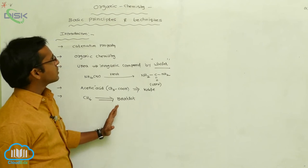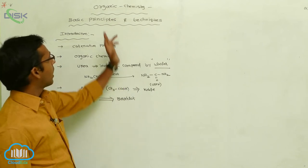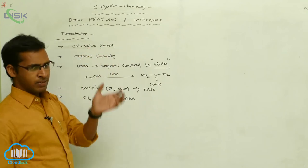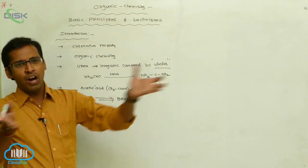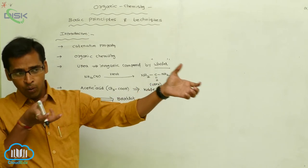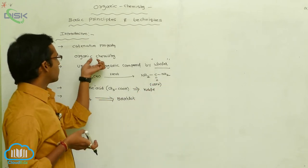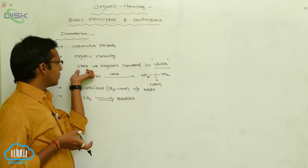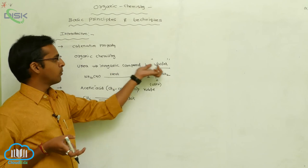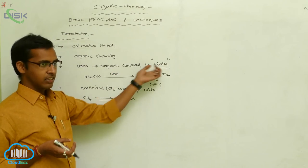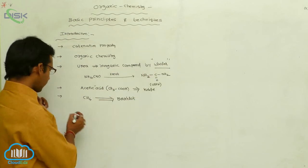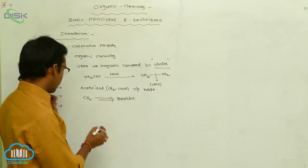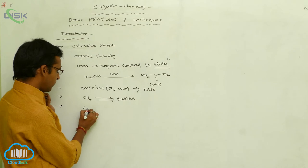In summary for the introduction: carbon shows the catenation property, meaning the linking of atoms to produce a large number of chains or longer chain lengths. The first prepared organic compound is urea, synthesized from an inorganic compound by Wöhler.